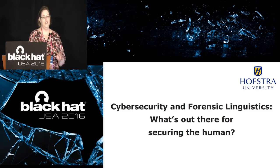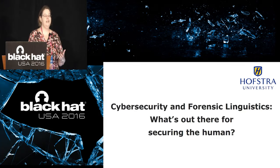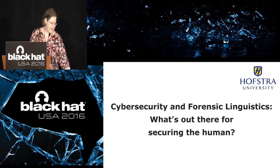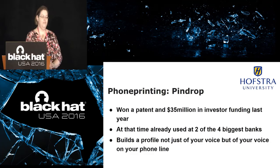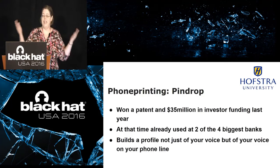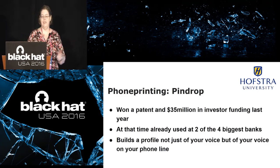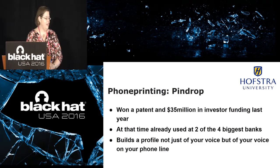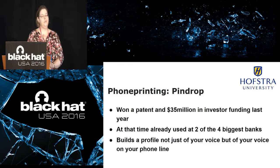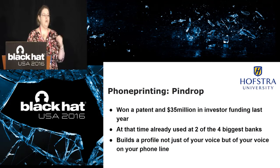Let's take a look at what's out there for securing the human. Every major data breach you've read about — people have credentials, and a lot of times that's through phishing. So what do we do to secure people right now? One of the major tools out there is about phone printing — this is Pindrop. They have a patent and a lot of venture capital funding, already used by two of the four biggest banks. Pindrop builds a phone print: a biometric signature of both your voice and the phone you're calling on.